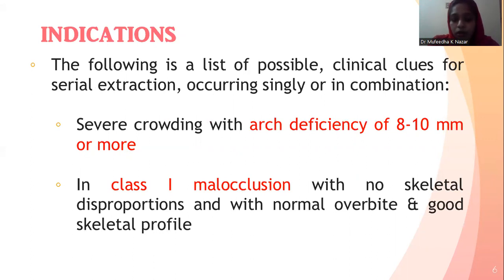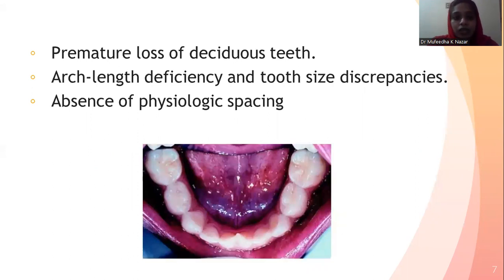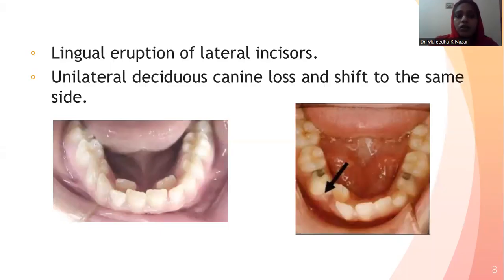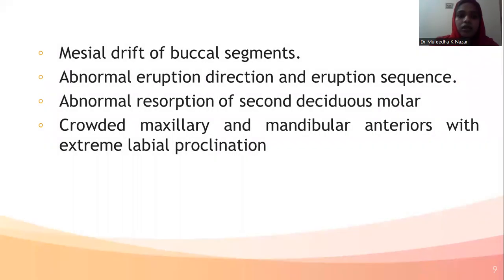It is also important that the patient should have a large amount of Class I malocclusion without any skeletal disproportion and with normal overbite and good skeletal profile. Other indications for serial extraction include premature loss of deciduous teeth, absence of physiological spacing, and lingual eruption of lateral incisors because of space loss. Also, unilateral deciduous canine loss and midline shift to the same side.